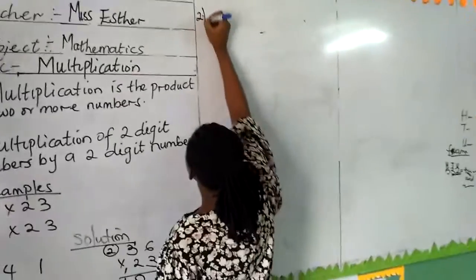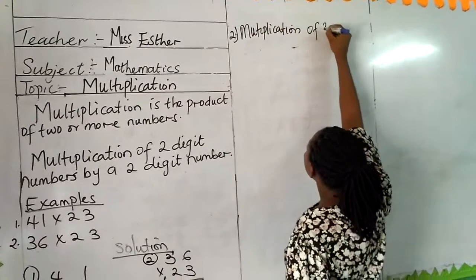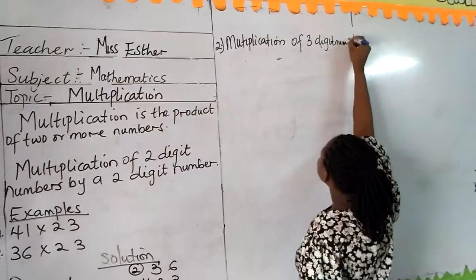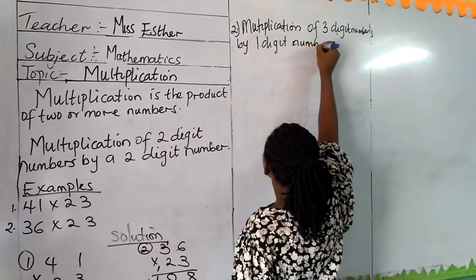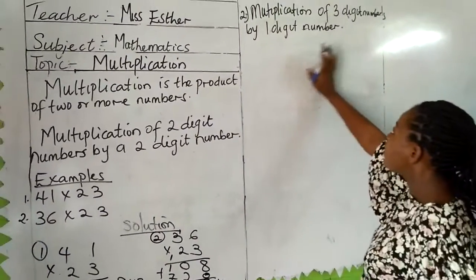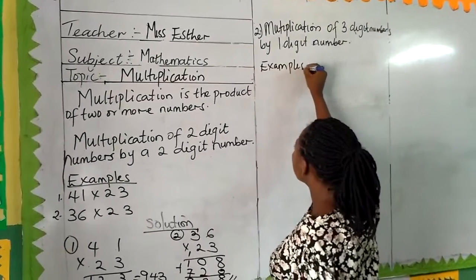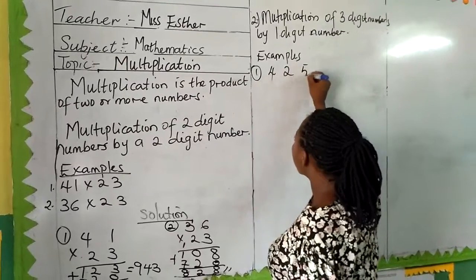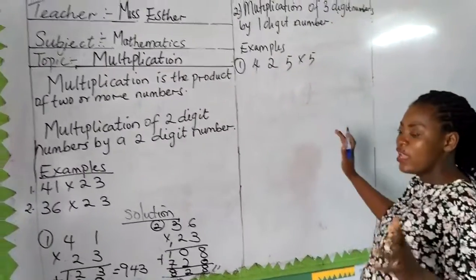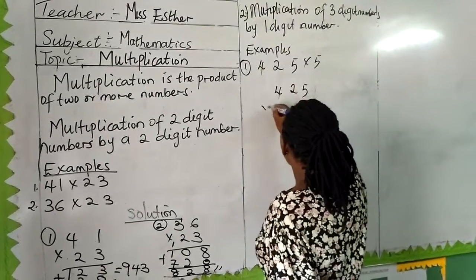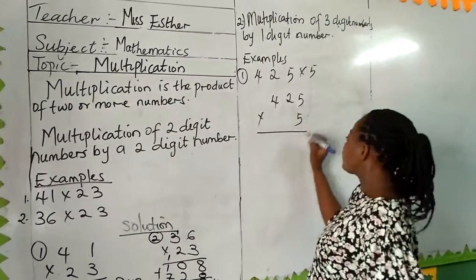Now we are looking at multiplication of 3-digit numbers by a 1-digit number. By example, I will give you a few examples to understand this. We have 425 multiplied by 5. We are going to do it in an expanded form. 5 times 5 will give us 25, so we are writing 5.